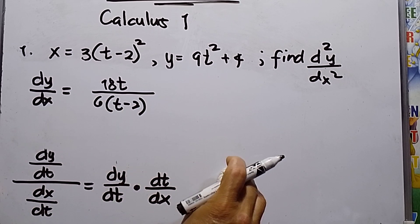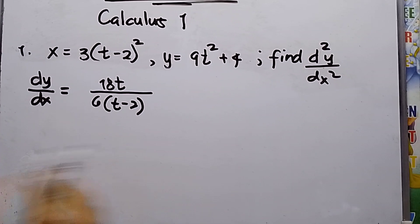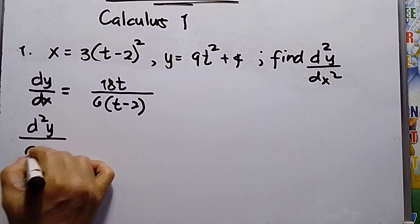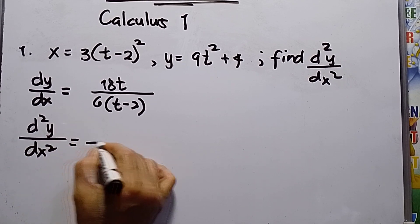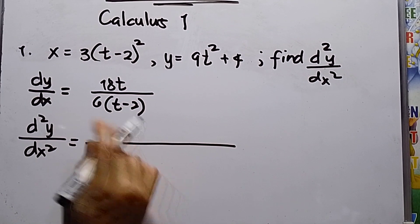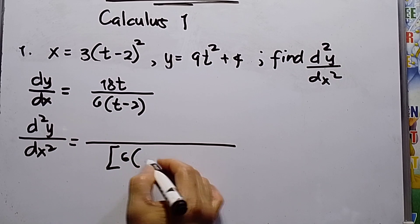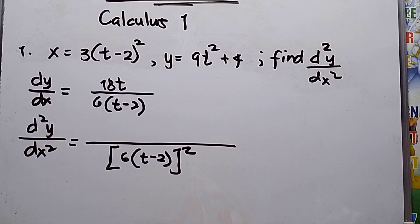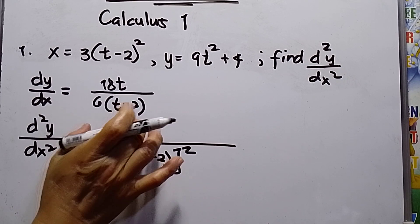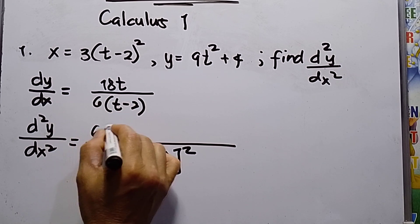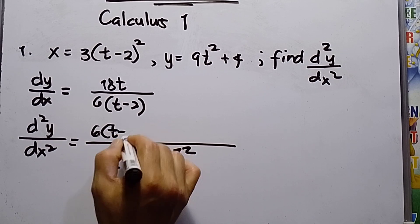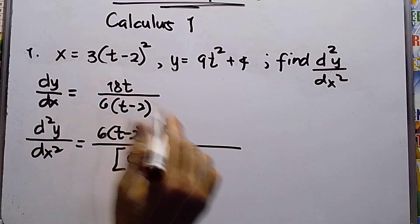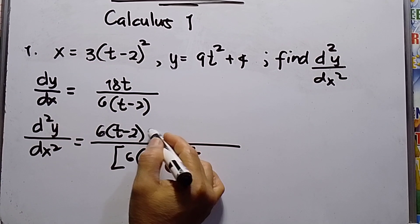Now find the second derivative, d²y over dx². This uses the quotient rule. I need to square the denominator: 6(t minus 2) squared. Then copy the denominator, 6(t minus 2), and differentiate the numerator, which gives 18.